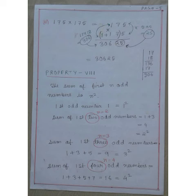Sum of first 3 odd numbers: 1+3+5, which is 9. 9 = 3². Here n = 3.